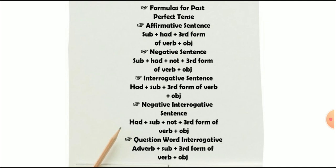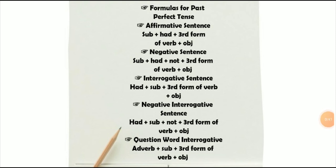Now I am going to discuss the formulas for the past perfect tense. For the affirmative sentence, we use: subject + had + third form of verb + object. For the negative sentence: subject + had + not + third form of verb + object. For the interrogative sentence: had + subject + third form of verb + object. For the question word interrogative sentences: adverb + had + subject + third form of verb + object.